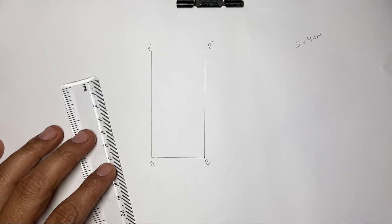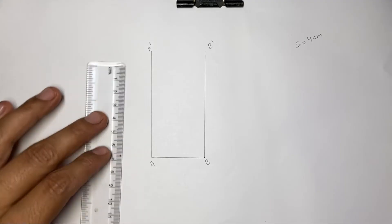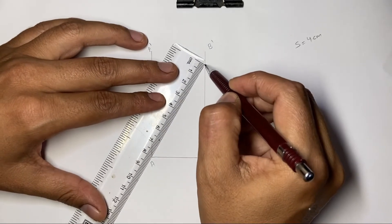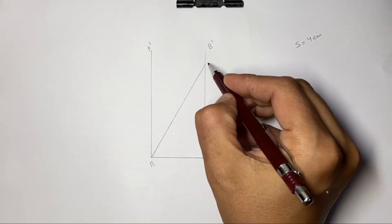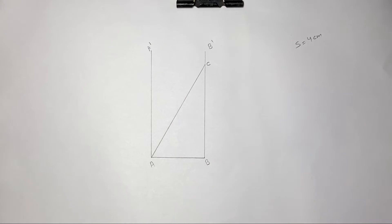Now draw a guideline double the length of our side from point A to the perpendicular guideline of the opposite side. Let us name this point C.